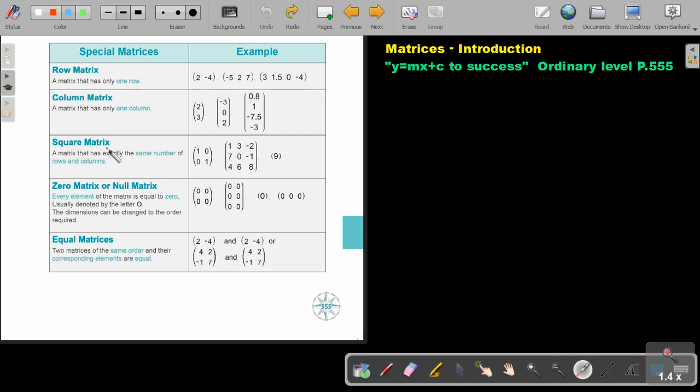What is a square matrix? A matrix that has exactly the same number of rows and columns. So, if it's two rows, it must have two columns. Three rows, it must have three columns.